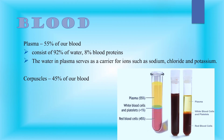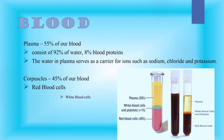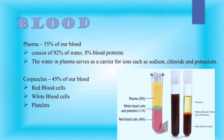The water in plasma serves as a carrier of ions such as sodium, chloride, and potassium. Corpuscles are composed of red blood cells, white blood cells, and platelets.